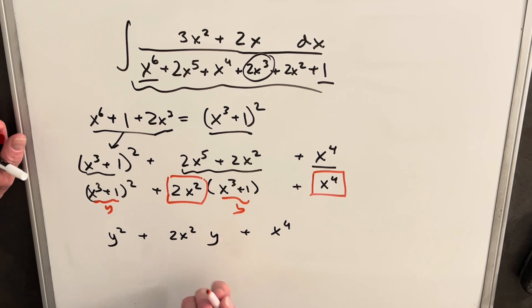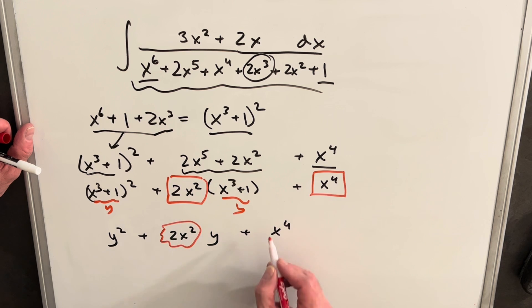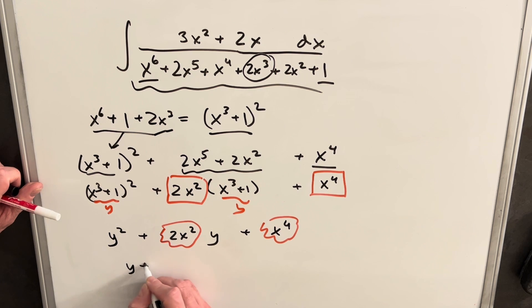So now we're writing this, we notice we have a quadratic in y. We'll just look at these as a constant value, and we can factor this quadratic now, and we can write this as just y plus x squared squared.